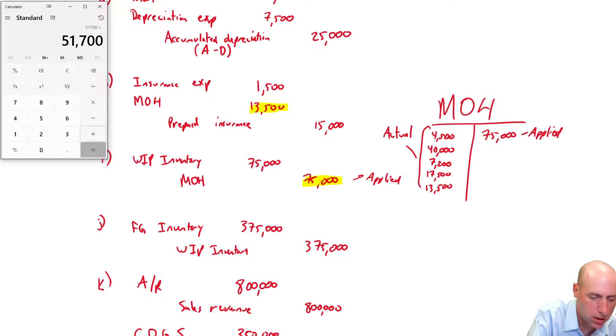And our actual, let's just total up our actual. You wouldn't do this in a normal T-account, but it's nice to kind of have the number. So our total debits here, plus $40,000, plus $7,200, plus $17,500, plus $13,500, I get $82,700 as my actual overhead. My applied overhead is $75,000. So if I take one side minus the other, the big side gets the balance. $82,000 minus $75,000 is $7,700.